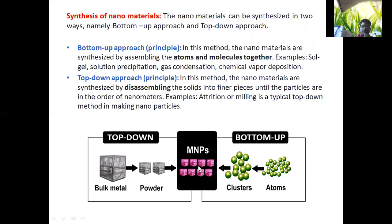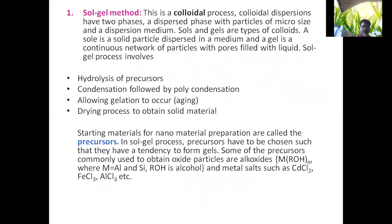From the top-down approach, bulk materials are ground into powders to finally get microstructure nanomaterials. Now, the sol-gel method comes under the bottom-up approach. This is a colloidal process. Colloidal dispersions have two phases: a dispersed phase with particles of micro size, and a dispersion medium. Sols and gels are types of colloids. A sol is a solid particle dispersed in a medium, and a gel is a continuous network of particles with pores filled with liquid.